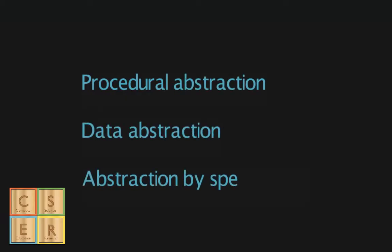There are different types of abstraction that computer scientists use. Some include procedural abstraction, data abstraction, and abstraction by specification.